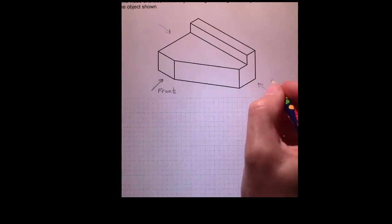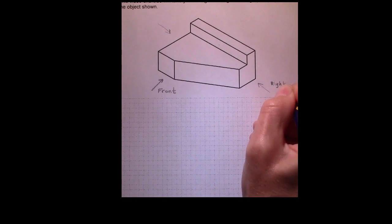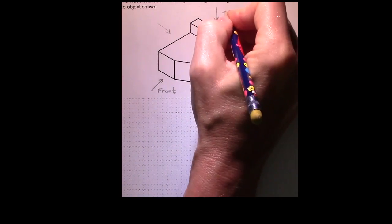So if this is our front view, then this is our right side view, and this is our top view.